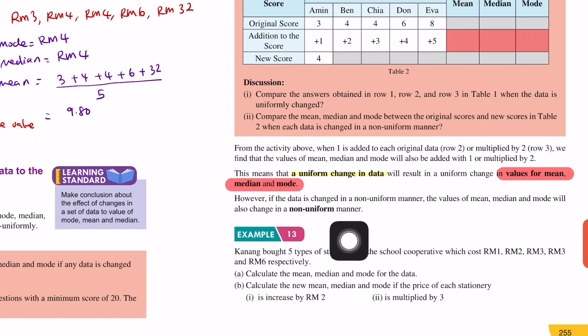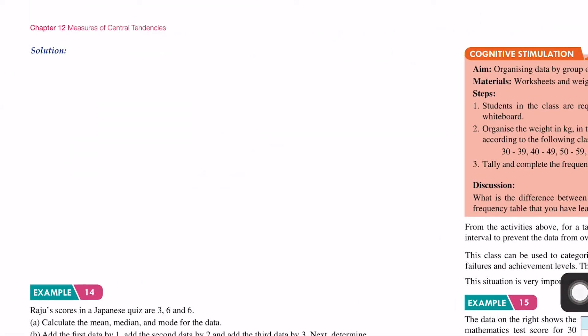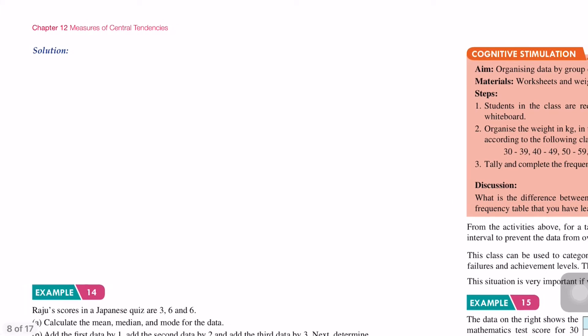Now let's look at Example 13. Kanang bought five types of stationary at the school cooperative which cost RM1, RM2, RM3, RM3, and RM6 respectively. Calculate the mean, median, and mode for the data. Next, calculate the new mean, median, and mode if the price of each stationary is increased by RM2 or is multiplied by 3.